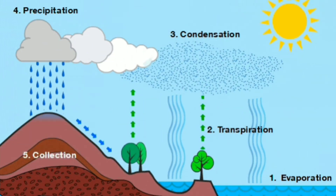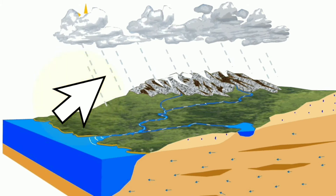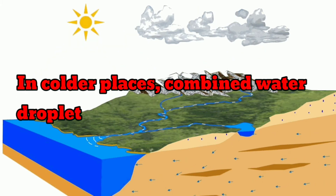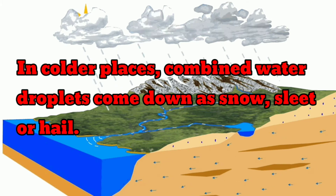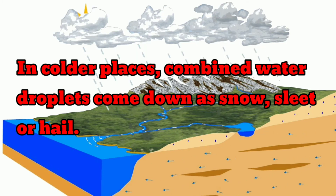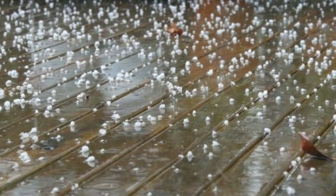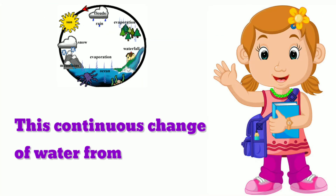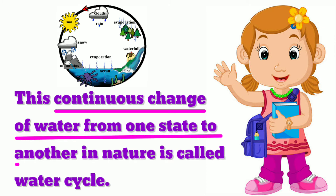Children, piregu kirae malayaga porigin run. In colder places, combined water droplets come down as snow, sleet or hail. Children, this continuous change of water from one state to another in nature is called water cycle.